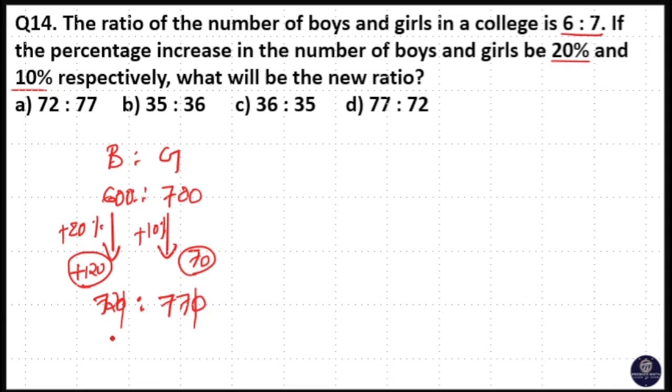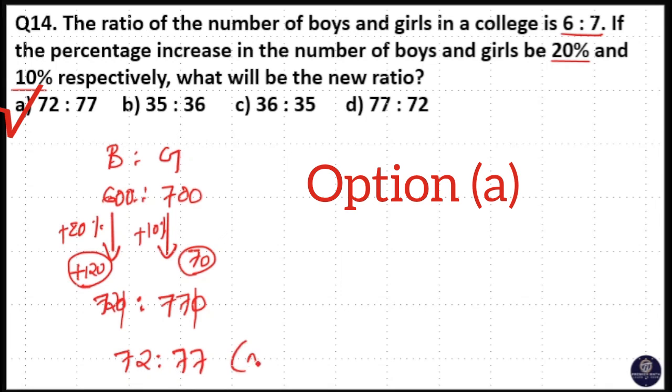So that means when I cancel out zeros, 72 to 77 is your new ratio.